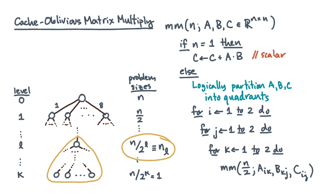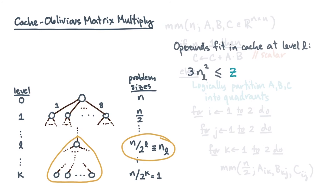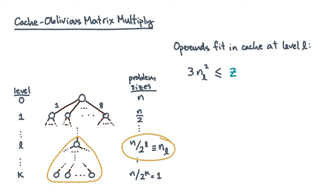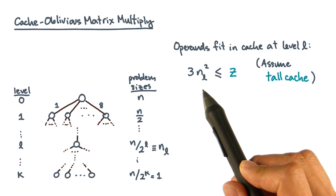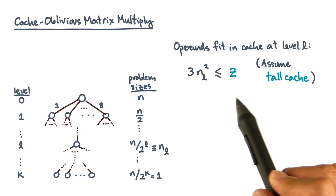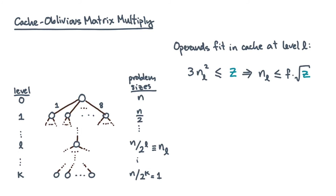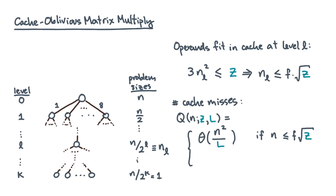At that point, it must be that three blocks fit in cache. If the matrix is stored in row or column major layout, you'd also need to assume tall caches. Then you can conclude that n sub l will be less than or equal to some constant fraction of z — denoted by the fudge constant f. So a recurrence for the cache misses will have two cases: the first is when the operands fit in cache, and the number of cache misses is just proportional to n sub l squared divided by l — that's the base case.